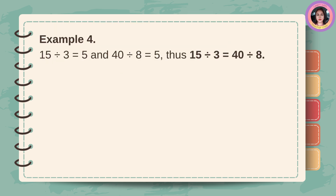Example number 4: 15 divided by 3 is equal to 5, and 40 divided by 8 is equal to 5. Thus, 15 divided by 3 is equal to 40 divided by 8.